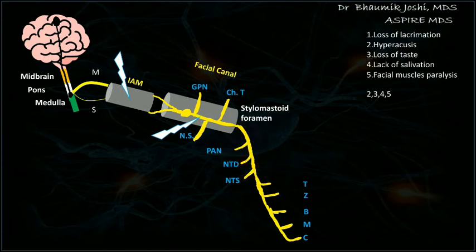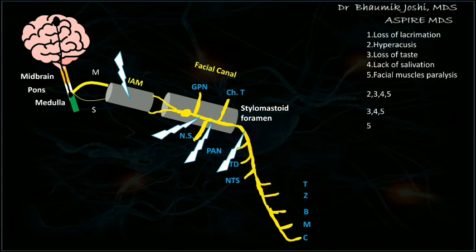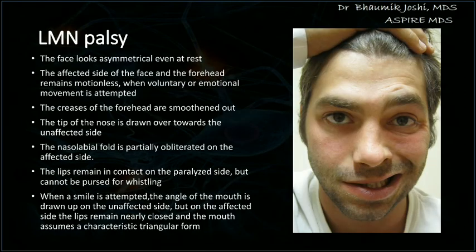If the lesion occurs after the nerve to stapedius, hyperacusis will also not take place; only loss of taste, loss of salivation, and facial muscle paralysis will occur. If the lesion is outside the stylomastoid foramen, only the muscles of facial expression will be affected — so only facial paralysis will take place. Depending on the site of the lesion, the clinical features differ.